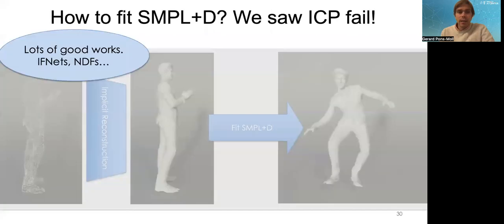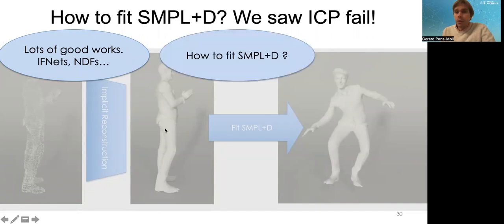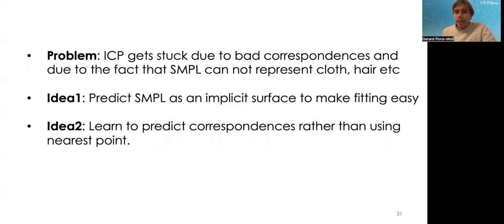Of course, the challenge here is that this problem at that time was relatively well understood. Basically, there were good models to predict implicit surfaces from point clouds. For example, methods from my group and also other groups like IF-Nets or NDFs, neural distance fields or implicit feature networks, would turn a point cloud, complete or incomplete or sparse or dense, into a continuous implicit surface. But the question is, how do you then fit a SMPL model to it? It seems like you're turning a point cloud into a surface, and then what's the gain? I still have to solve the registration problem. The main problem is that ICP gets stuck due to bad correspondences and due to the fact that the SMPL model cannot represent cloth and hair and so on. The objective is not well minimized because the model cannot explain the data.